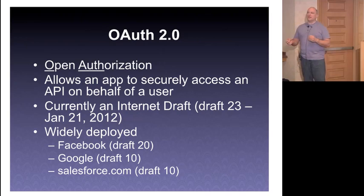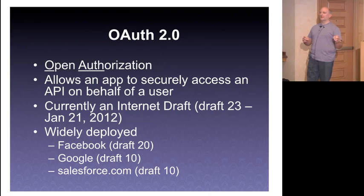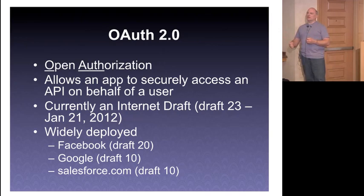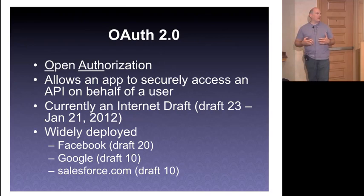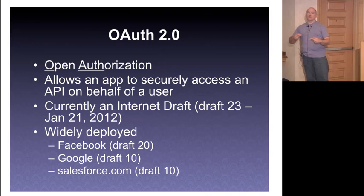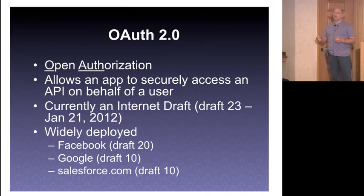OAuth 1 was functional and fulfilled the same use case, but it was awkward to use. You had to construct a signature for requests going to the authorization server, and getting those digital signatures working was a big problem. One of the big changes in OAuth 2 is that you can push all of that security down to the transport layer — you basically just punt the security down to SSL, the fact that everything is going over an encrypted channel.